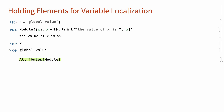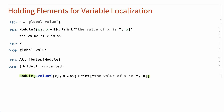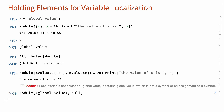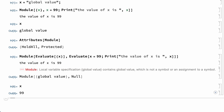The Module function has the HoldAll attribute, so all of the elements in Module are normally held unevaluated. If the arguments are evaluated by enclosing them in Evaluate, the global value of x gets used before the enclosing Module can do anything about it. In this example, that evaluation also changes the global value of x, all of which happens before Module is called.